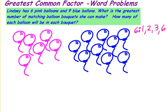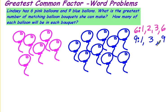The factors of nine are one and nine, and then three times three. So the greatest common factor would be three.